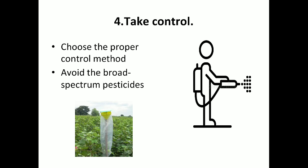The fourth step is to take control. Based on effectiveness and risk, choose the proper control method, use integrated or combined control practices, and avoid spraying of broad-spectrum pesticides. So these are the steps for implementation.